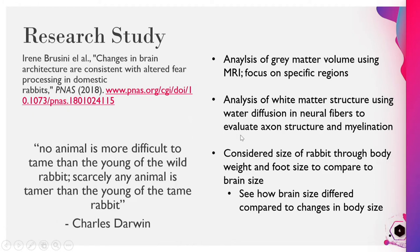The research study I'm going to be explaining today looked at brain architecture in domestic and wild rabbits. One of the key things they focused on was Charles Darwin's quote: 'No animal is more difficult to tame than the young of a wild rabbit, and scarcely any animal is tamer than the young of a tame rabbit.' That's what we're going to be looking at today and finding out why that is true.